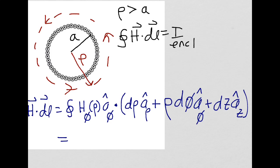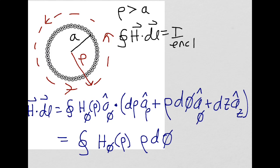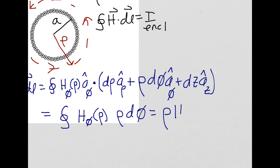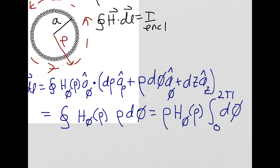So this dot product reduces to the integral of H sub phi times rho d phi. Around this Amperian loop, rho is held constant, and because rho is constant, H sub phi is also constant, so both can be moved outside the integral. We're left with just the integral of d phi. To move around this closed path, phi changes from 0 to 2 pi, so the integral of d phi from 0 to 2 pi equals 2 pi. Our integral becomes 2 pi rho times our H component in the phi direction.